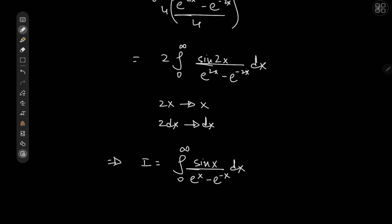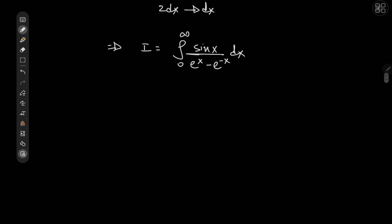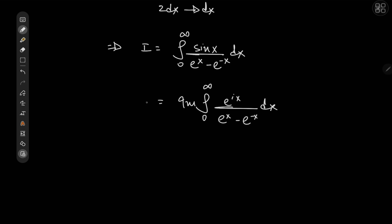Now, the sine function is part of the complex exponential, so we write this as the imaginary part of the integral from zero to infinity of e^{ix} over (e^x minus e^{-x}) dx. Now we just have a lot of exponential functions to deal with, which is quite nice.